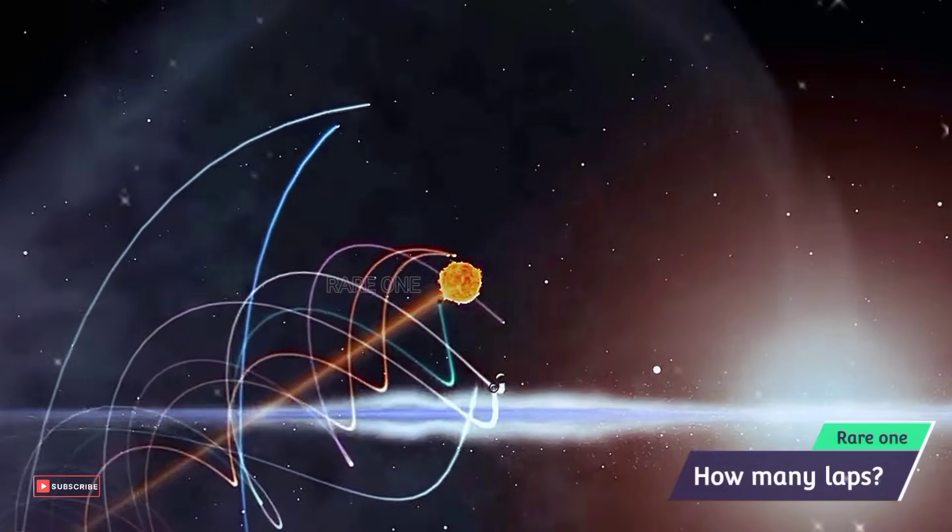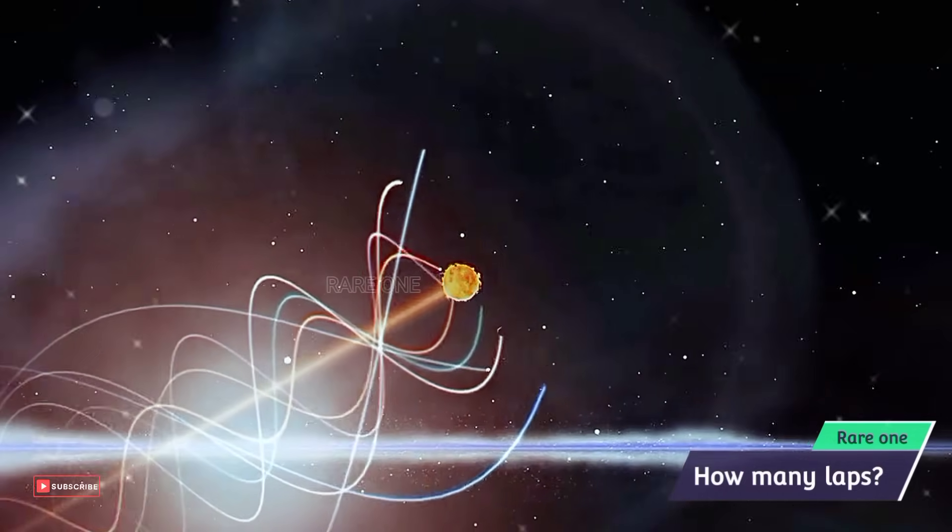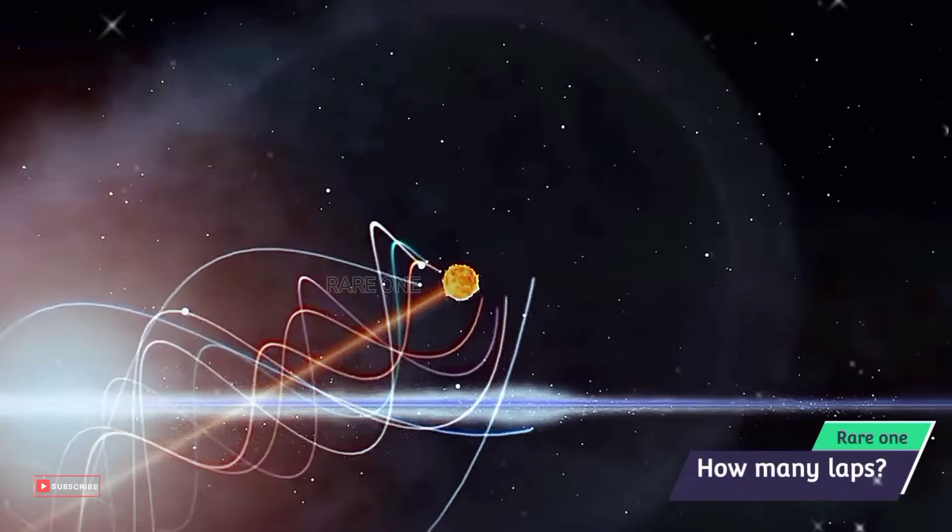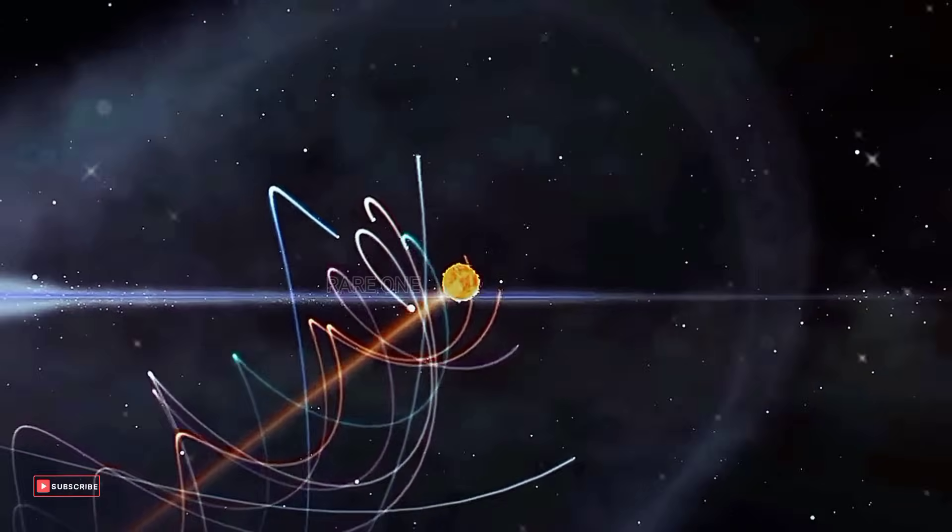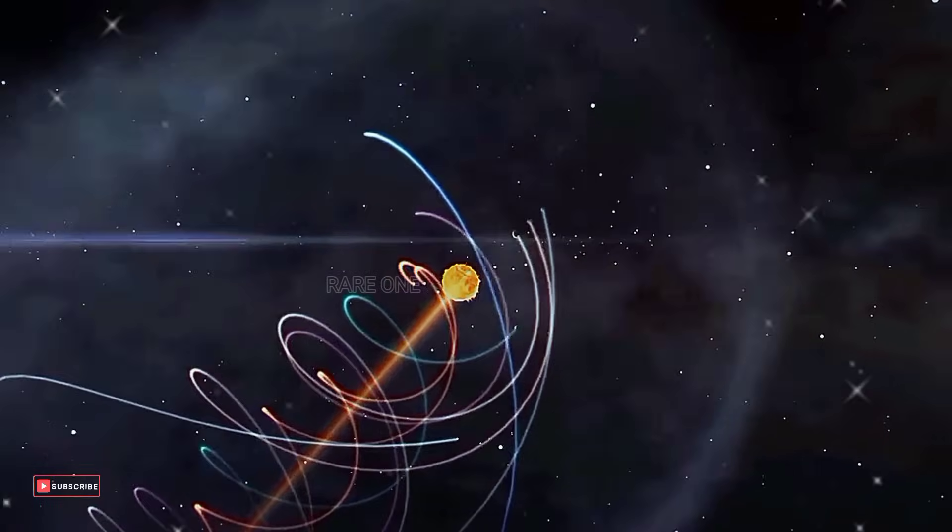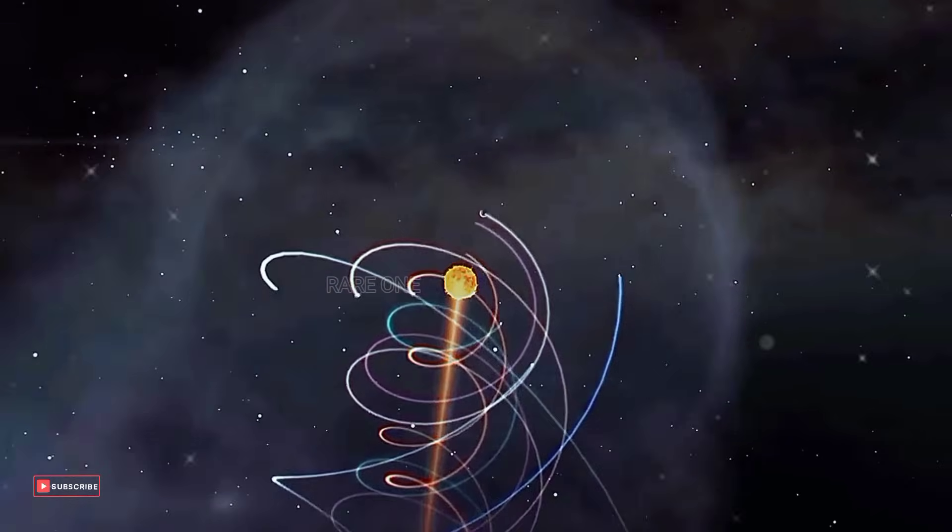But here's the big question: How many laps has our solar system completed around this gigantic black hole? It's a tricky puzzle to solve, because unlike the predictable orbits of planets around the Sun, our Sun's path through the Milky Way is far longer and less stable.